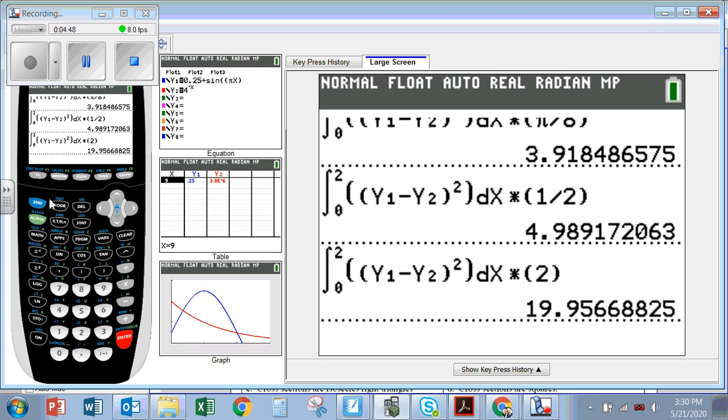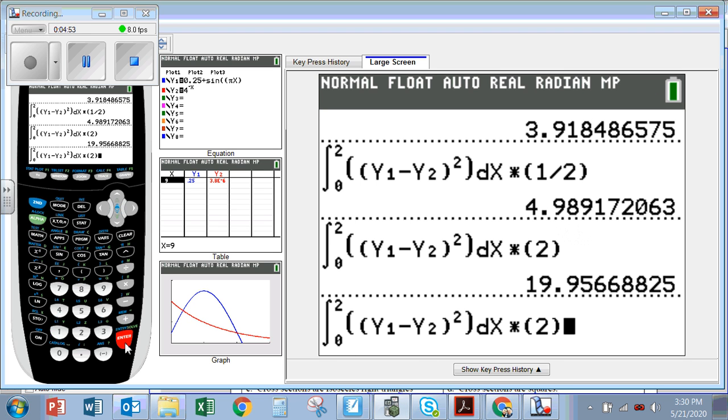Good. And now I do second entry, and this is one-third, 1 divided by 3. Okay, and this will give me 3.326.